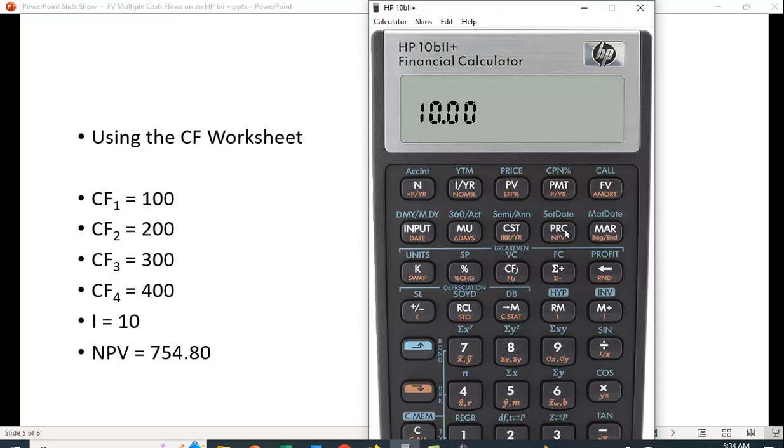And here let me make this larger now, so that you can see, under this PRC key, it says NPV. So again, if we hit the function key, we hit NPV, we get the net present value of $754.80.